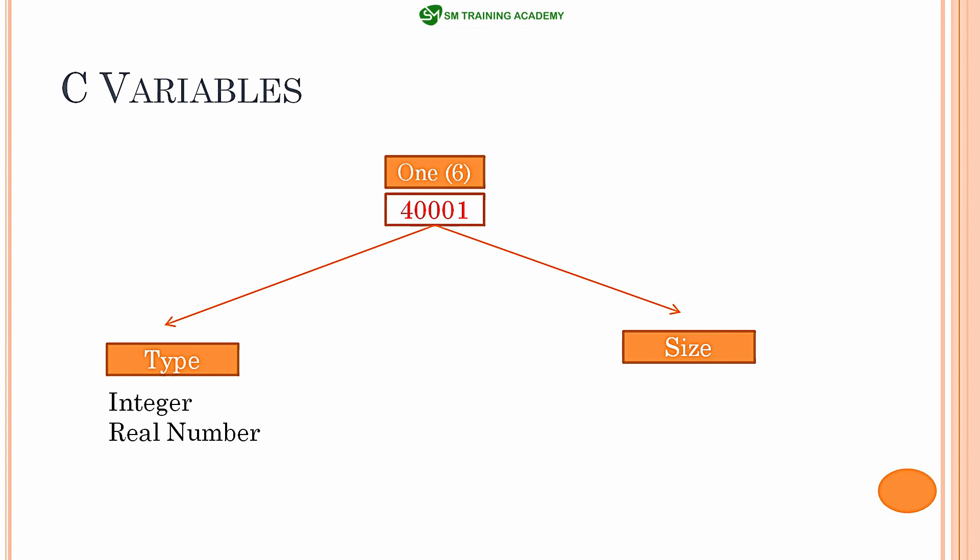The size of the data you are going to store has many variants based on the size you require in your program — that may be 1 byte, 2 bytes, 4 bytes, or 8 bytes, etc. These two are the main characteristics you want to keep in mind before declaring and defining a variable in C language. In the next video, we will discuss in detail how to define a variable and what default data types are available in C language. See you in the next video. Thanks for watching.